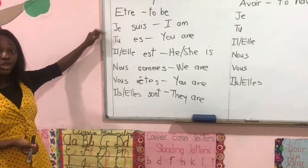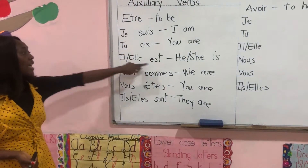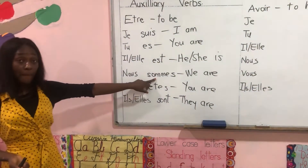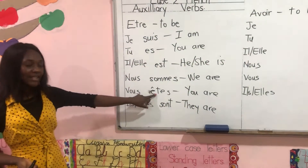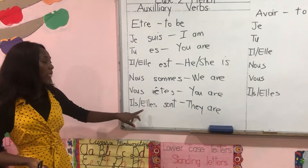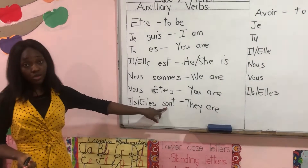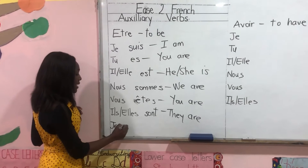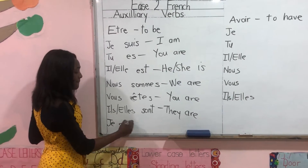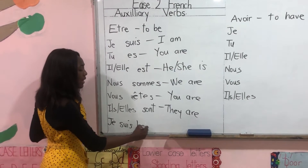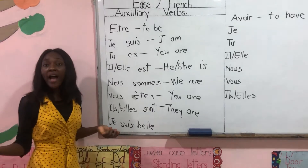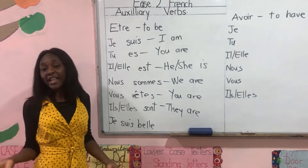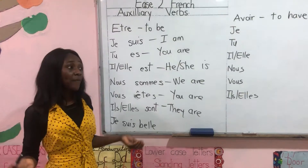Je suis, tu es, il est, elle est, nous sommes, vous êtes, ils sont, elles sont. For example: je suis belle — I am beautiful. Je suis Nigérienne — I am Nigerien.